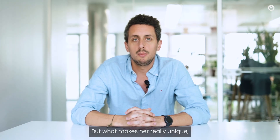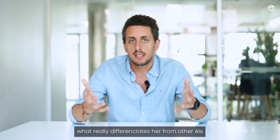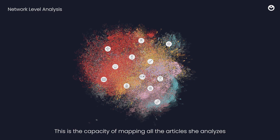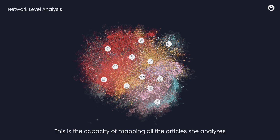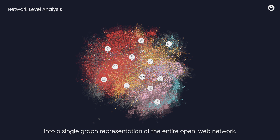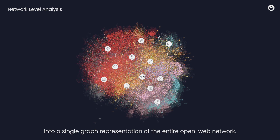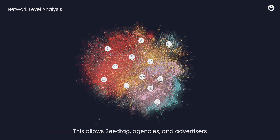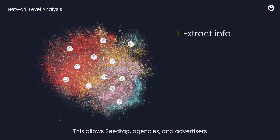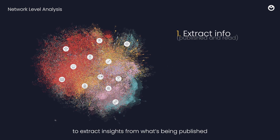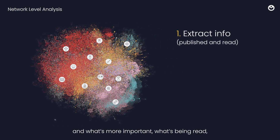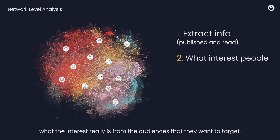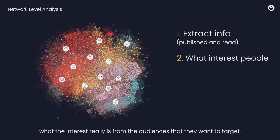But what makes her really unique — what really differentiates her from other AIs — is the network level analysis. This is the capacity of mapping all the articles she analyzes into a single, broad representation of the entire open web network. This allows Seedtag, agencies, and advertisers to extract insights from what's being published, and more importantly, what's being read — where the interest really is from the audiences they want to target.